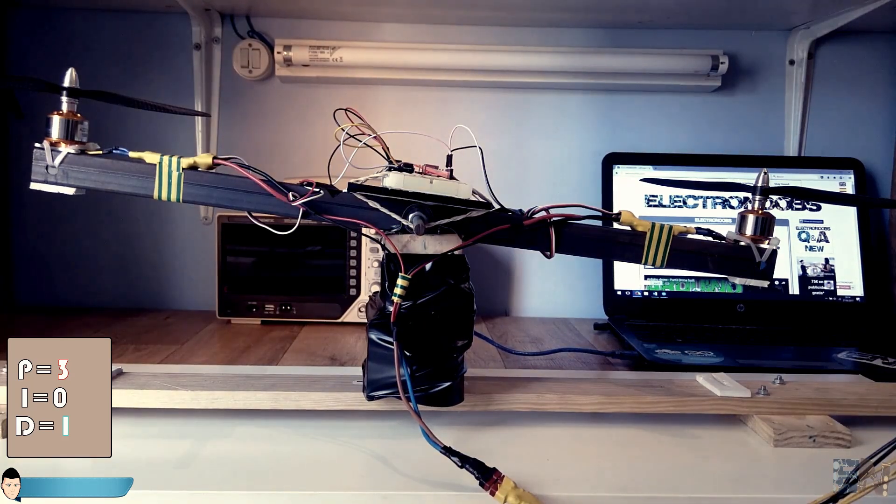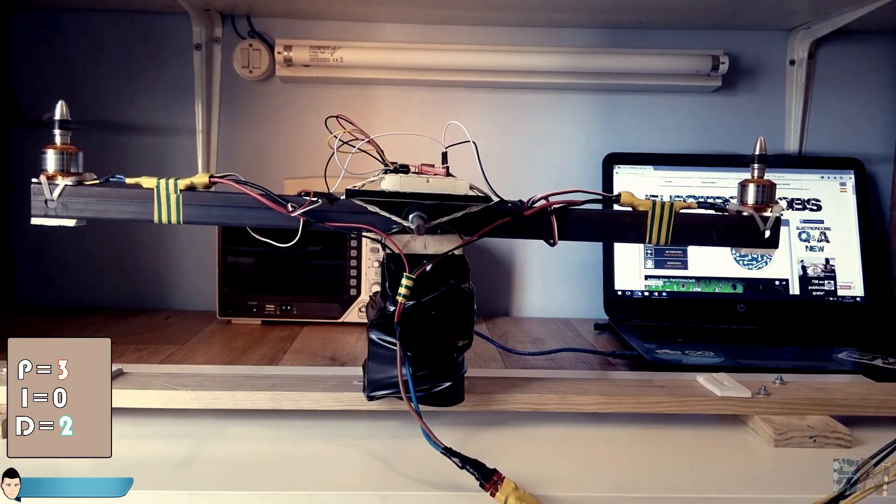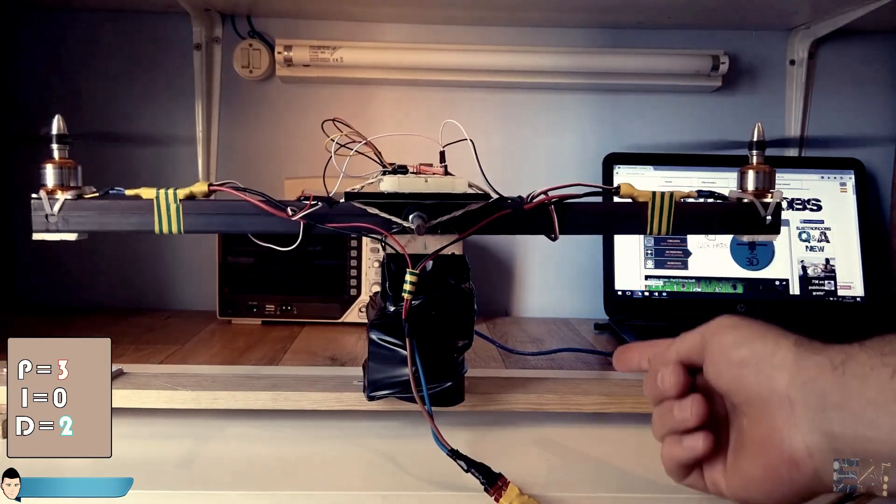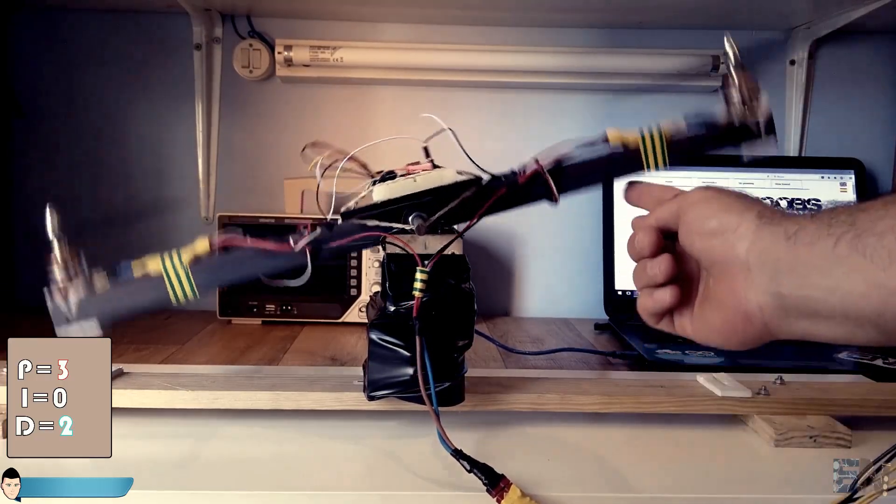To cancel both effects I'll make the PID output to be the sum of the proportional and derivative values. After some tests I've set the derivative constant to 2 and the result was quite good. Now the system stabilizes itself quite well with a good response to the fast speed changes.